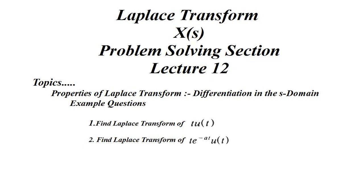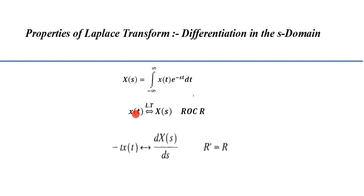In lecture 12 we will discuss the differentiation in s-domain property of the Laplace transform. Previously we discussed differentiation in time domain, and now we will discuss differentiation in s-domain. The property states: if a signal x(t) has Laplace transform X(s) with ROC R, then the signal minus t·x(t) has a transform obtained by differentiating X(s). So differentiation in s-domain is equivalent to multiplication of the signal by minus t.